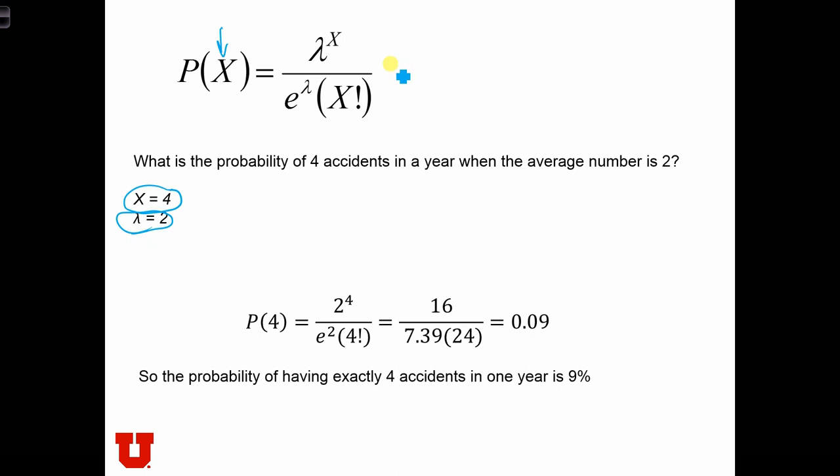All we have to do is plug in the numbers into this equation. We have lambda to the power of x, so 2 to the power of 4. We have e to the power of lambda, so e squared. And then we have 4 factorial, x factorial. That's equal to 16. e squared in my calculator was 7.39. And 4 factorial is 4 times 3 times 2 times 1, which is just 24.